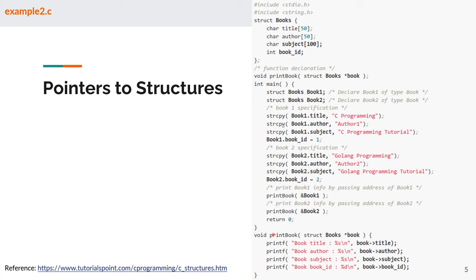The initialization and string copy are the same as the previous way. But here we define the 'print_book' function, and its input is a struct passed via pointer. What this function does is print out the values of the detailed variables for the given structure. When accessing the inner variable of a structure through a pointer, we use the arrow symbol, not the dot, to access the real data.